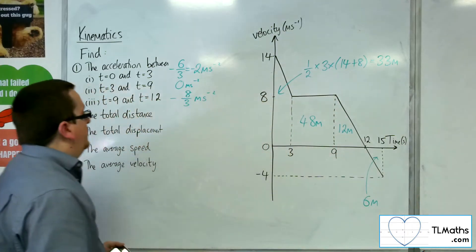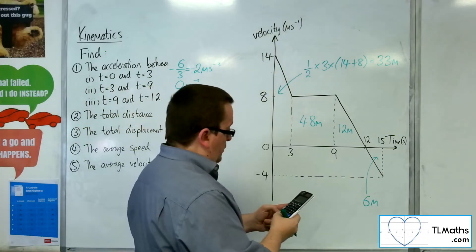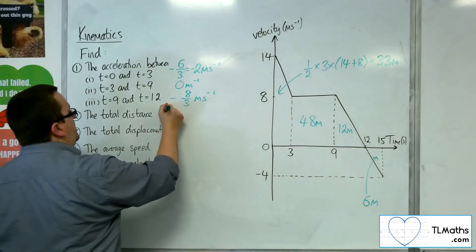So the total distance is those 4 added together. So we have 33 plus 48 plus 12 plus 6, and that gets us 99 metres.